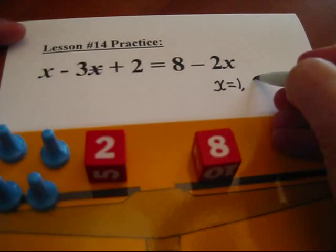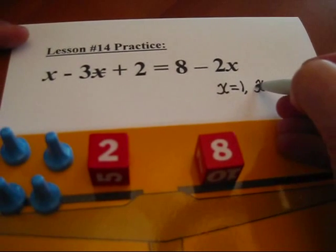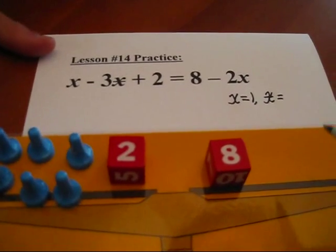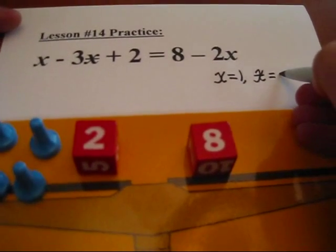Now, if x is equal to 1, what would the value of star be? Star would be negative 1. Okay, star is the opposite of x, so it would be negative 1.